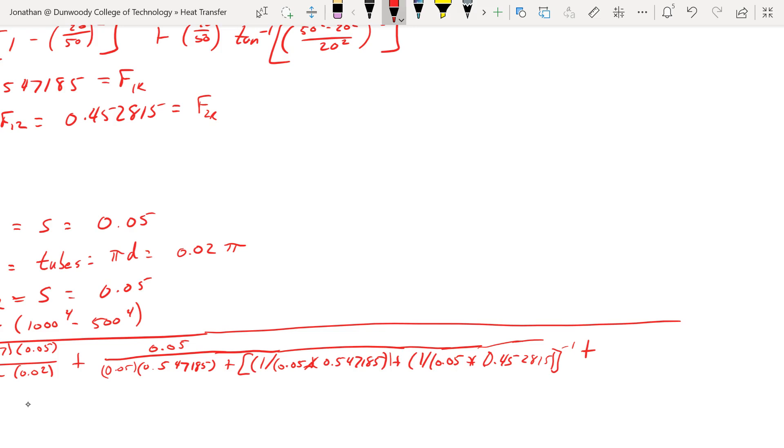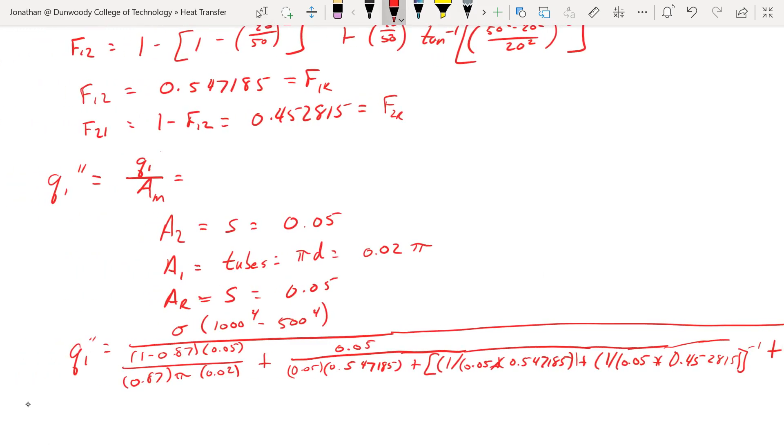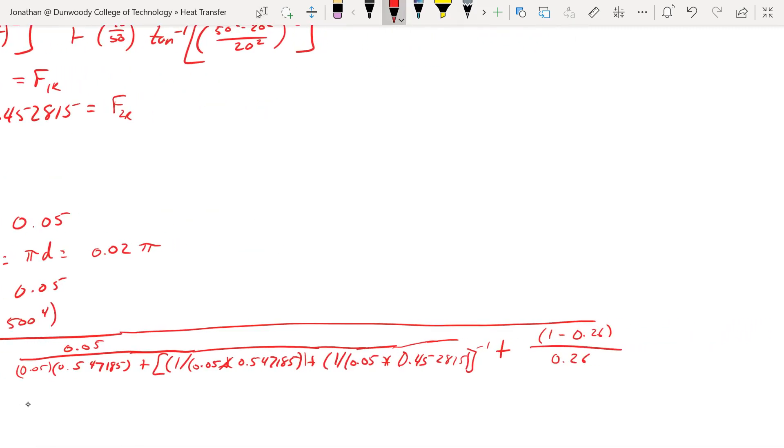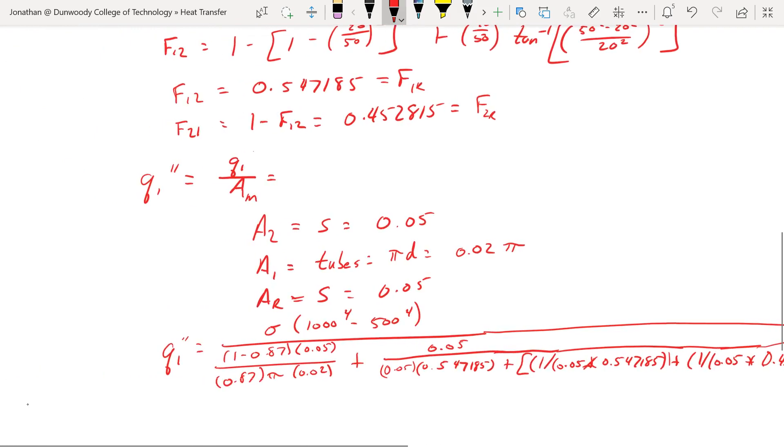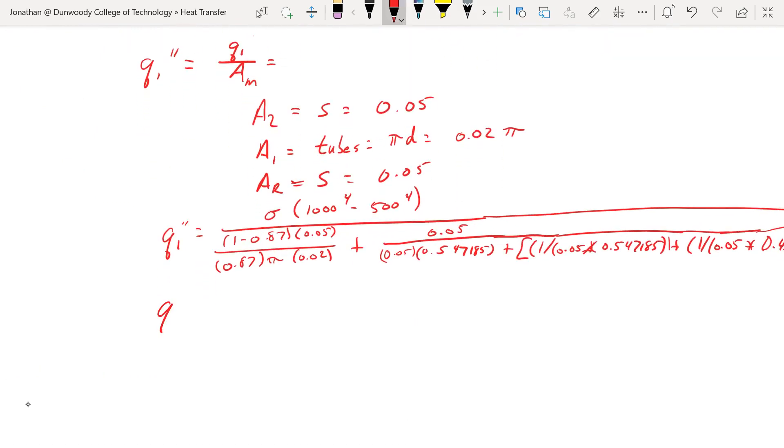Still underneath here, plus the last material resistance: 1 minus epsilon 2, which is 0.26, over 0.26, so we divide by that area. So we multiply by the area of that, divide by the area of the tubes to get that to cancel out. So if I carry that through, plug that in my calculator, I find 12.59 kilowatts per meter squared, Q1, 12.6 kilowatts per meter squared.